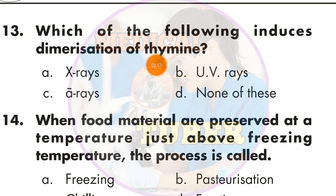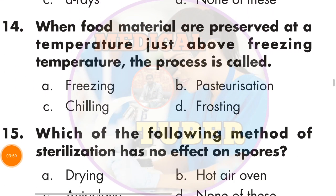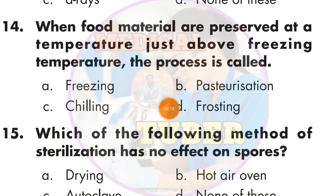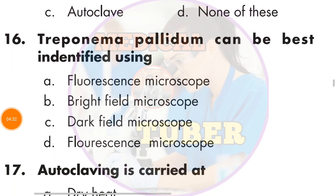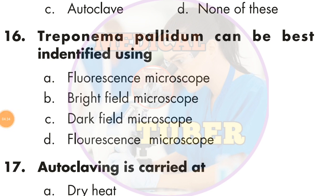Question number 14: When food materials are preserved at a temperature just above freezing temperature, the process is called — the answer is C — chilling. Question number 15: Which of the following methods of sterilization has no effect on spores? The answer is A — drying.